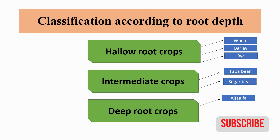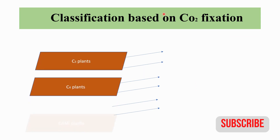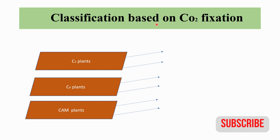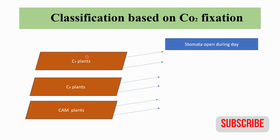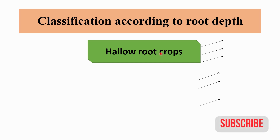Classification based on carbon dioxide fixation has three types: C3 plants, C4 plants, and CAM plants, where CAM stands for Crassulacean Acid Metabolism. In C3 plants, the net assimilation is 15 to 40 mg CO₂ per dm² per day, and CO₂ compensation point is 30 to 70 ppm. The stomata open during daytime, and the enzyme involved in primary carboxylation is RuBisCO (Ribulose-1,5-bisphosphate carboxylase). Examples include wheat, barley, and rye.